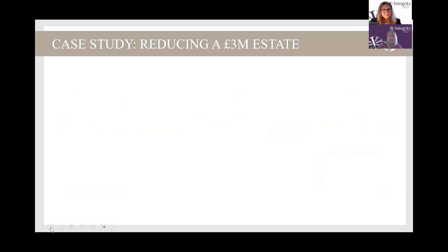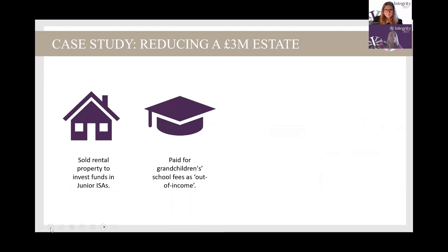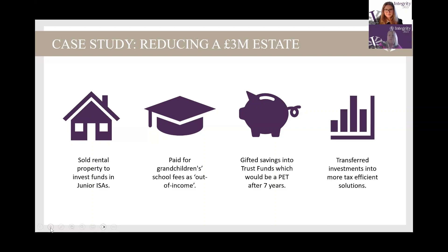There are a number of different things to consider here, and not every option fits every person. The first scenario to look at is to sell the rental property and invest the funds into junior ISAs or other products that would go to their children and grandchildren. They could pay for their grandchildren's school fees out of their income using the gifts out of normal expenditure rule. They could also gift some of their savings into trust funds as a potentially exempt transfer — outside of their estate after seven years. And they could transfer some investments into more tax-efficient solutions; certain investments could be exempt from inheritance tax after a two-year period.